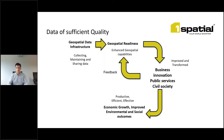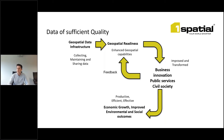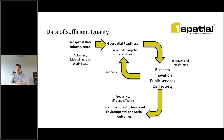A geospatial data infrastructure typically consists of geospatial data assets such as data sets, registers and identifiers; standards to enable access and interoperability; technologies used to curate and provide access to those data assets; guidance and policies that inform the use and management of data assets; organisations that govern the data infrastructure; and communities involved in contributing to or maintaining it — again, a collaborative approach. The geospatial data infrastructure is the beating heart of geospatial data management, enabling collecting, maintaining and sharing of data. This includes processes to ensure that data quality is maintained in existing data as well as new data being added in.